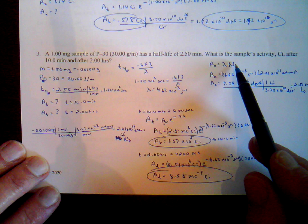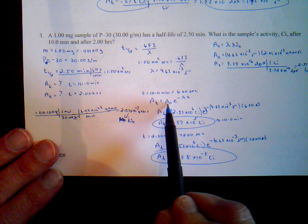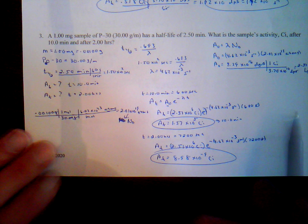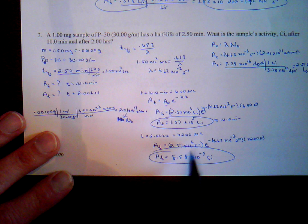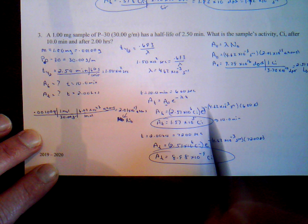For the activity after 10 minutes — 600 seconds — we use the activity equation with the initial activity we just solved for and the decay constant. We get 1.57 times 10 to the 5 curies. For activity after two hours — 7,200 seconds — the initial activity and decay constant remain the same; only the time changes. We get 8.98 times 10 to the minus 9 curies.